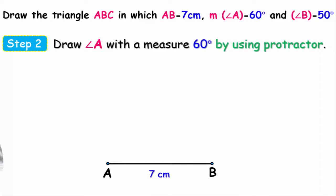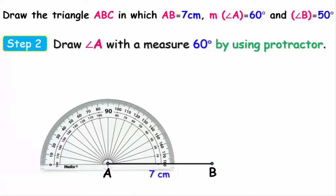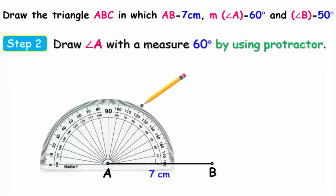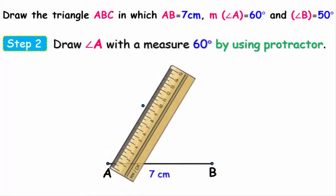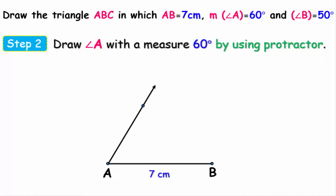Set the center of the protractor on point A. From the right side of the protractor, start from zero degrees and get to 60 degrees, then put a dot at this measurement. Using a ruler and pencil, draw a ray that starts from point A and goes to the dot. Now we have drawn angle A whose measure is 60 degrees.